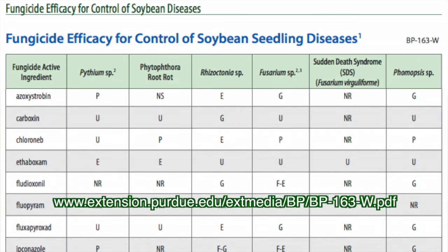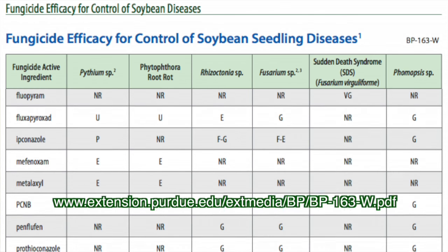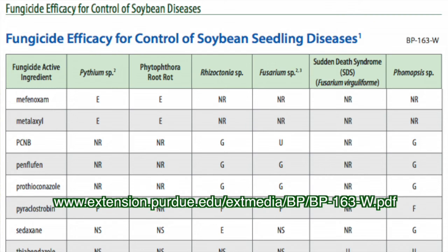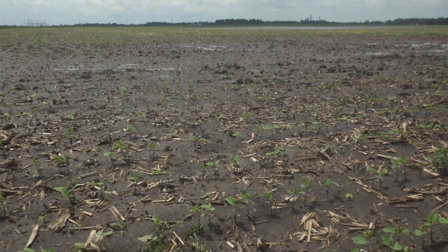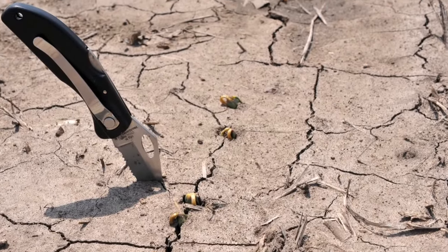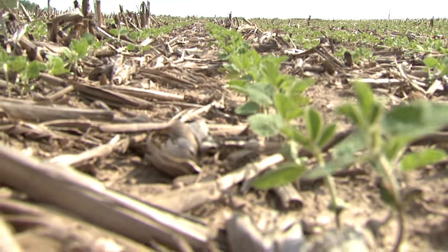If you confirm seedling blights in your field, there are a few steps you can take to minimize the impact of these diseases in the future. As plant pathologists, we compile a list of available seed treatments and their efficacy against certain organisms every year. Higher probability of a stand problem or planting into cool soils means early planting conditions will many times benefit from use of a seed treatment. Heavy rains following planting, compaction, high amounts of residue — these types of things can be very favorable for seedling disease. So if you've had a history of a soybean stand problem or are planting in any of these conditions, I'd recommend the proper seed treatment to get that soybean stand off to a great start.